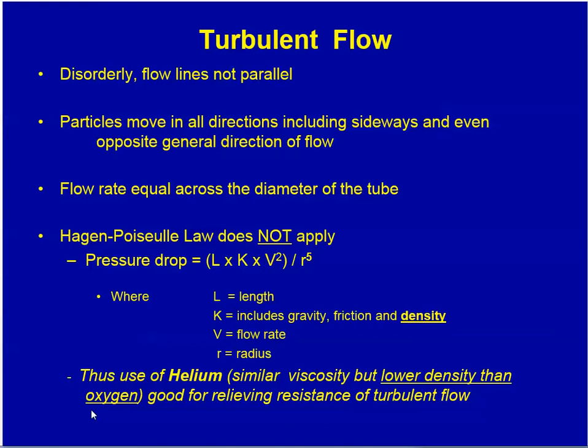Turbulent flow, on the other hand, is disorderly. The flow lines are not parallel. The particles move in all directions, including sideways and even opposite to the main flow direction, and flow is equal across the entire diameter of the tube. The Hagen-Poiseuille law does not apply, and the pressure drop is influenced by density and inversely to the fifth power of the radius. Thus, the use of helium, which has similar viscosity but lower density, is preferred for relieving resistance due to turbulent flow.